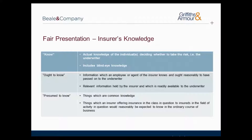Insurer's knowledge is broken down into three categories. Firstly, what the insurer knows — for example, what is disclosed on the proposal form itself. Secondly, what the insurer ought to know — for example, information passed to an underwriter by the insurer's appointed loss adjuster or information on previous proposal forms. Thirdly, what the insurer is presumed to know — for example, insurers of construction professionals might be presumed to know from previous claims that building sites above former open cast mines are considered high risk sites, being knowledge acquired in the ordinary course of business.